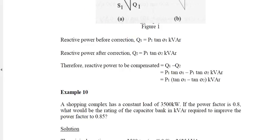Reactive power before correction Q1 is given as P1 tangent theta 1 kVAR. Reactive power after correction Q2 is P1 tangent theta 2 kVAR. The reactive power to be compensated is Q1 minus Q2, so that's P1 tangent theta 1 minus P1 tangent theta 2. The compensation required is the real power times bracket tangent of the angle before compensation minus tangent of the angle after compensation.